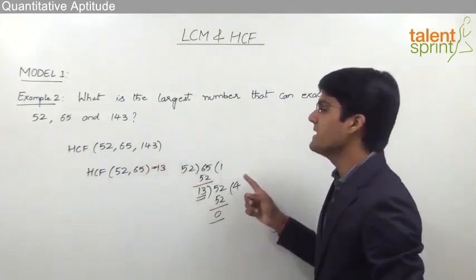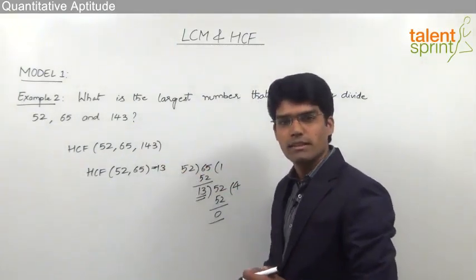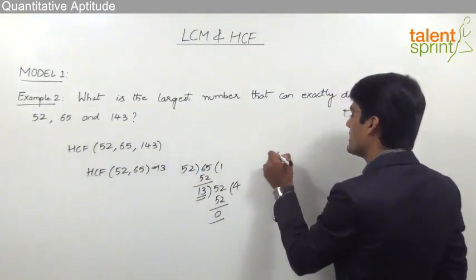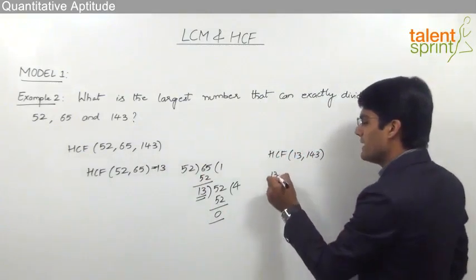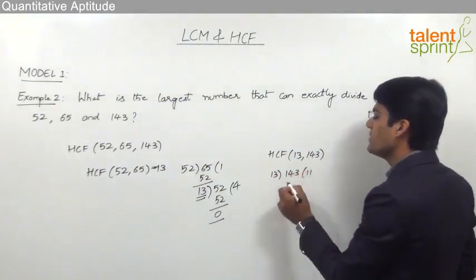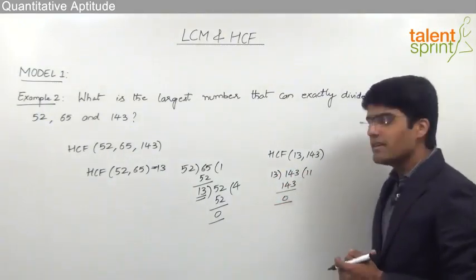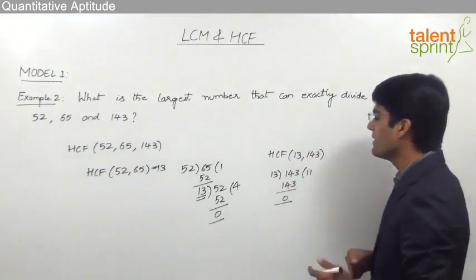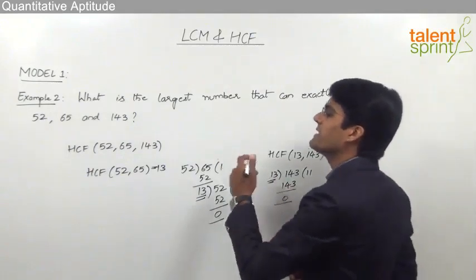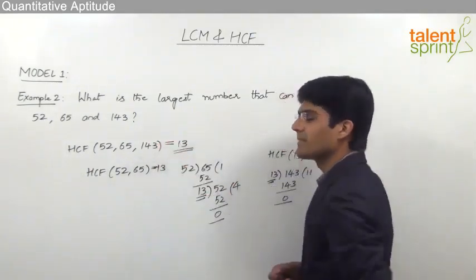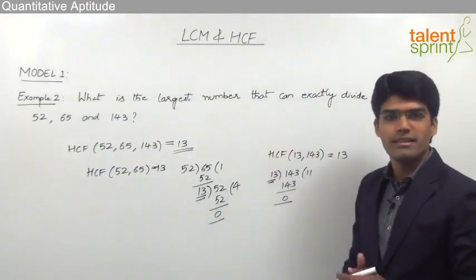Now to find the HCF for all three numbers, we find the HCF of 13 and the remaining number, 143. Dividing 143 by 13: we know 13 × 11 = 143, so the remainder is 0. Since the remainder is 0, the HCF of 13 and 143 is 13 itself. So the overall HCF of all three numbers is 13, meaning 13 is the number which can exactly divide 52, 65 and 143.